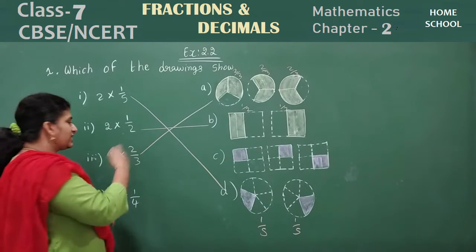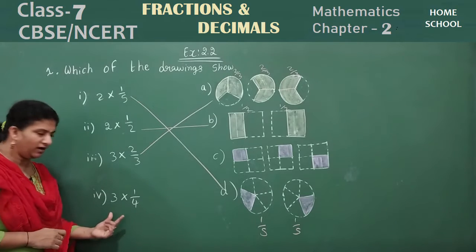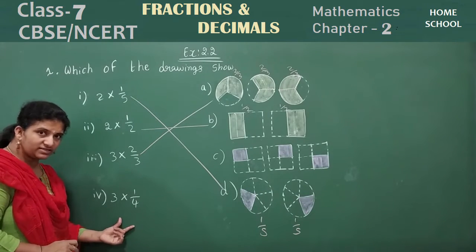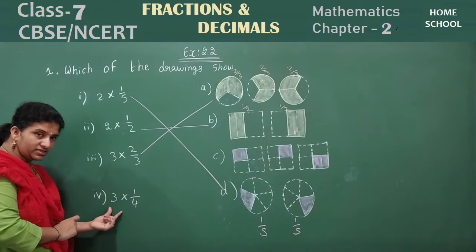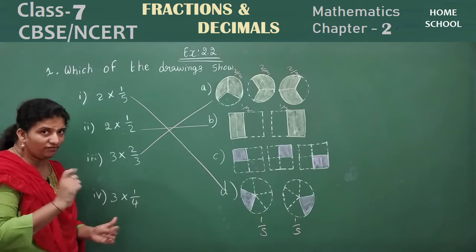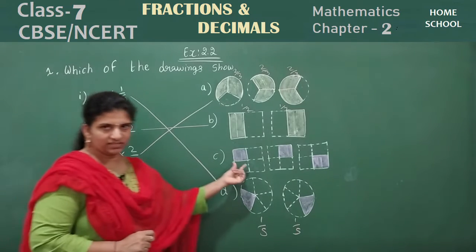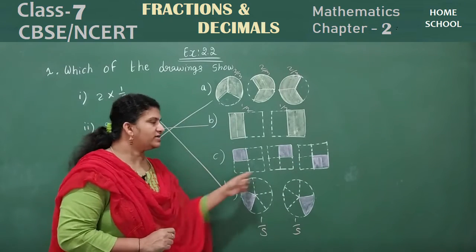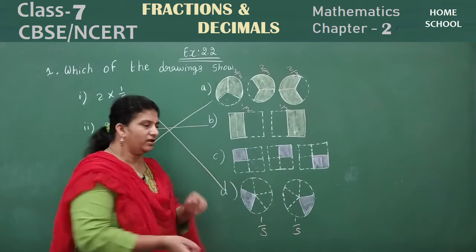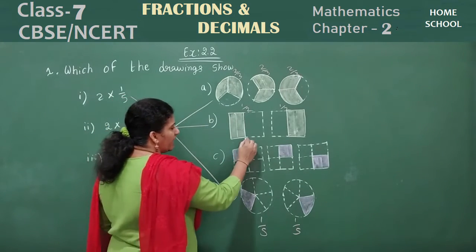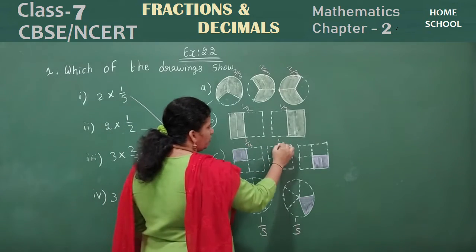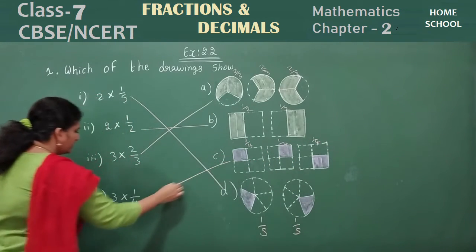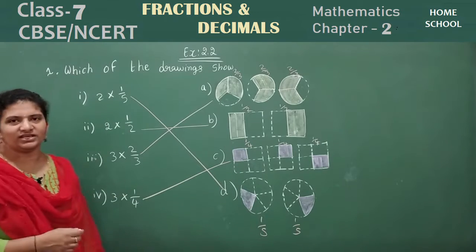Coming to the last question: 3 into 1 by 4. That means 3 figures each having a fraction of 1 by 4. Let's observe — 1, 2, 3 figures are there. The whole is 4 and shaded is 1, so the fraction is 1 by 4 for each. That is 3 into 1 by 4.